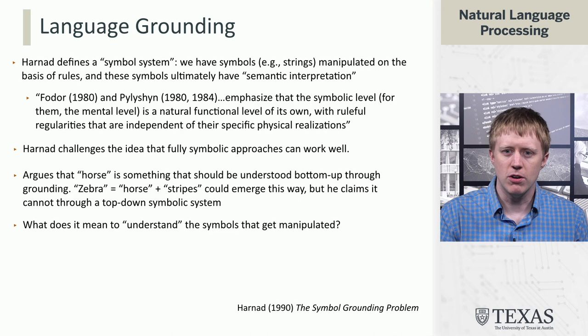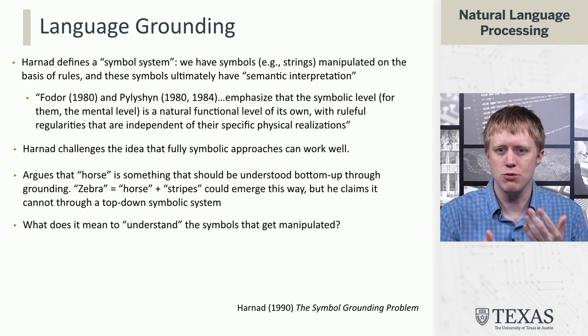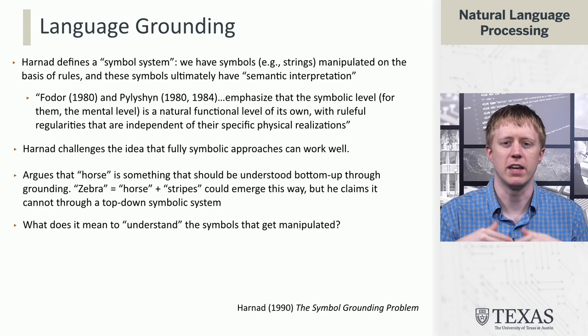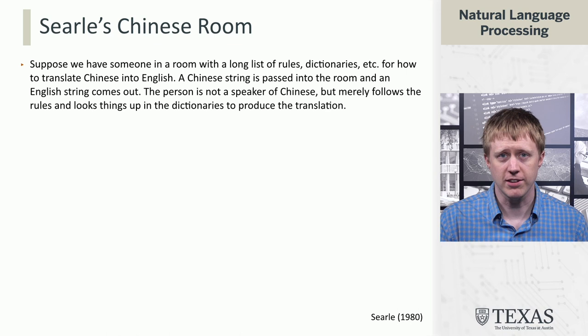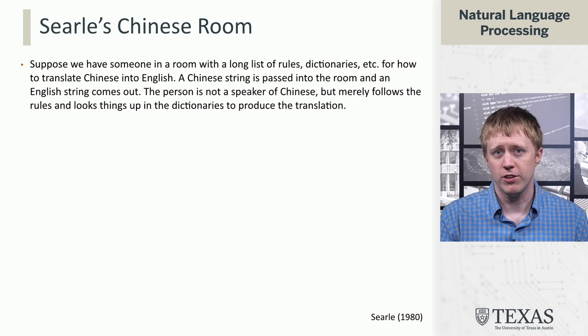In some sense, the measure of a system is: can it do the kinds of manipulations that we want it to do? What does it mean to understand versus to just be able to do tasks? Is ChatGPT really understanding stuff, or is it just manipulating these symbols? One of the classic arguments for this is the Chinese Room argument from Searle.